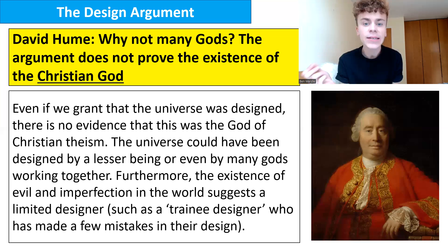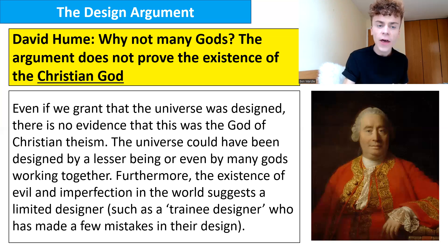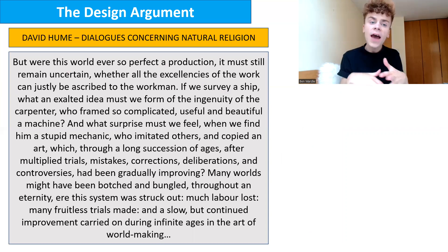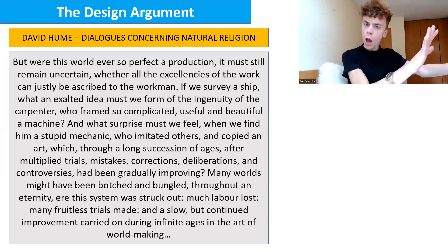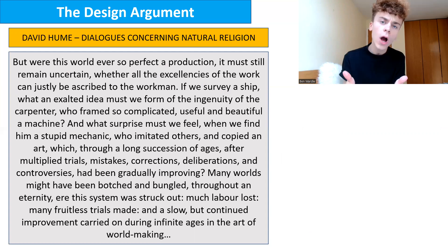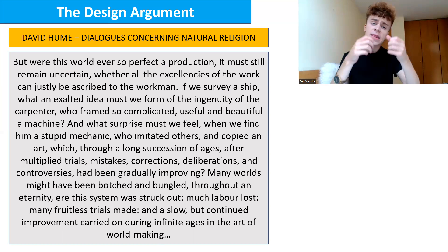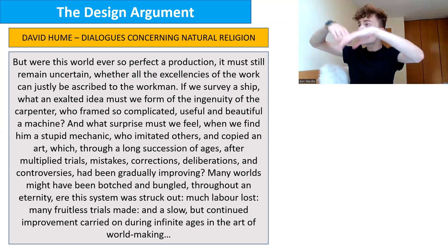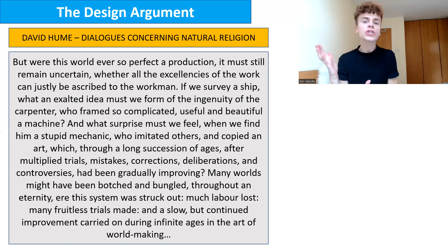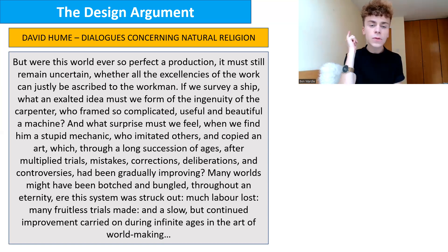David Hume uses the example of a shipmaker: a watch might need one watchmaker, but a ship is much more complex and requires many people to build. So if you need many people to make a ship, surely you would need many gods to make an entire universe. How does Paley arrive at the conclusion that one monotheistic God created all of this? Paley's response refers to God's characteristics — omnipotence, omniscience — but Hume challenges whether this follows from the evidence.